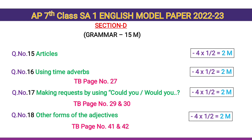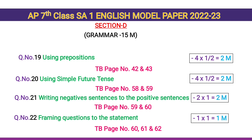Question number 18 — other forms of the adjectives — 4 questions, 4 × ½ = 2 marks. Textbook page number 41, 42. Question number 19 — using prepositions — 4 questions, 4 × ½ = 2 marks. Textbook page number 42, 43. Question number 20 — using simple future tense — 4 questions, 4 × ½ = 2 marks. Textbook page number 58, 59.